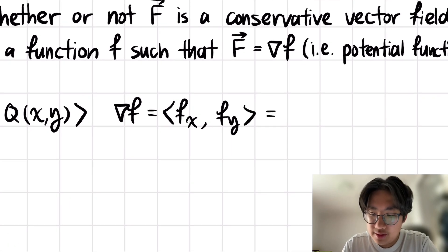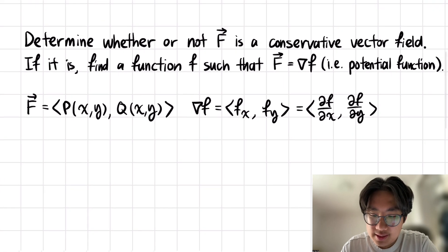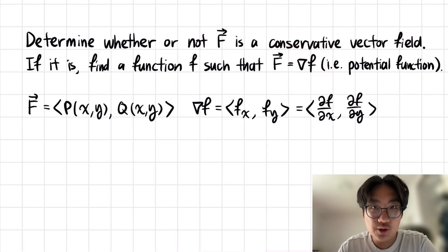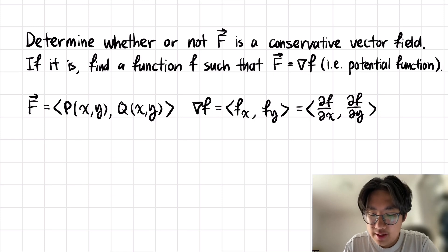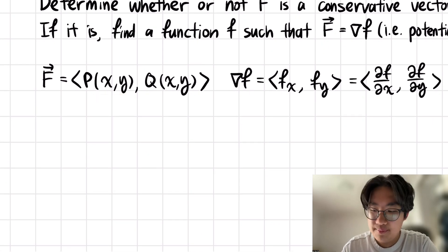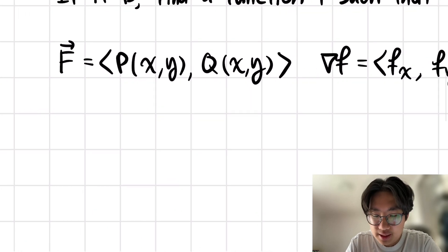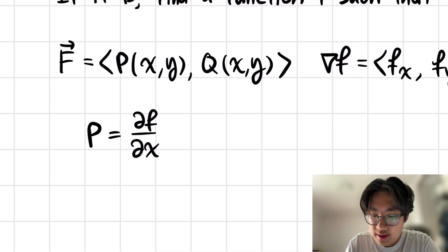From this condition, we know that these two vectors must be equal to each other, meaning they're equal component-wise as well. We can effectively equate these, which gives us that P has to equal partial f partial x, and that Q must equal partial f partial y.